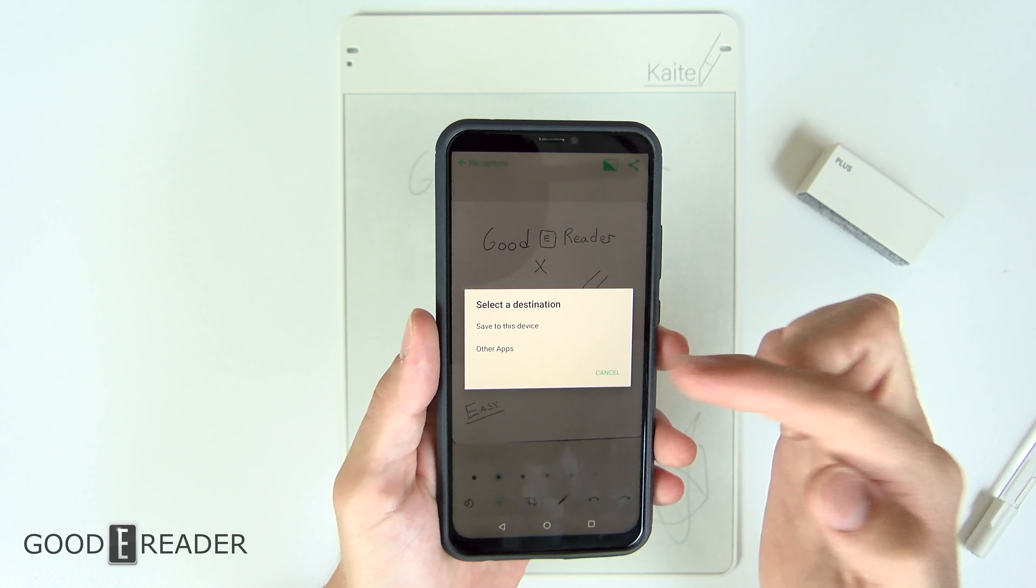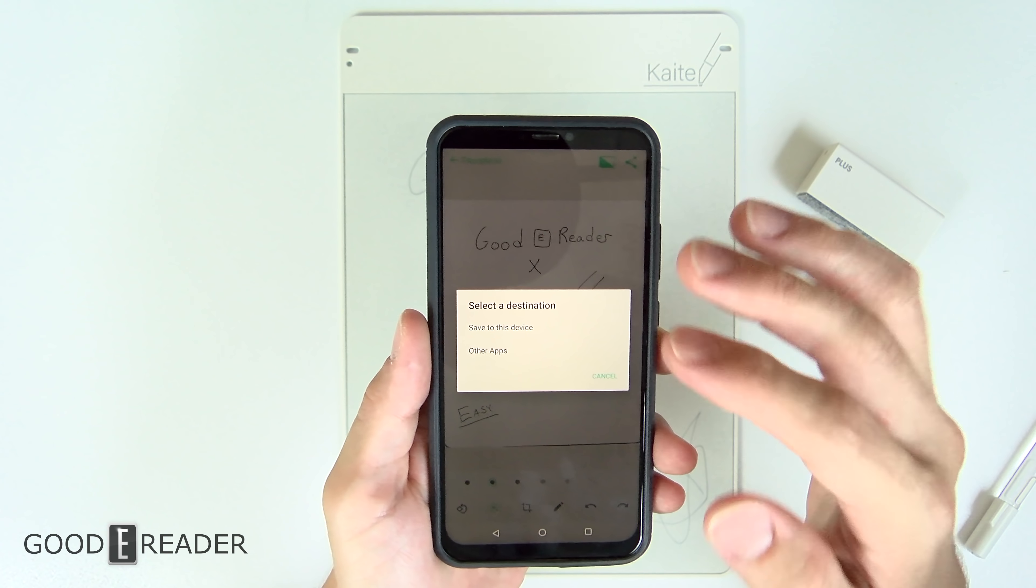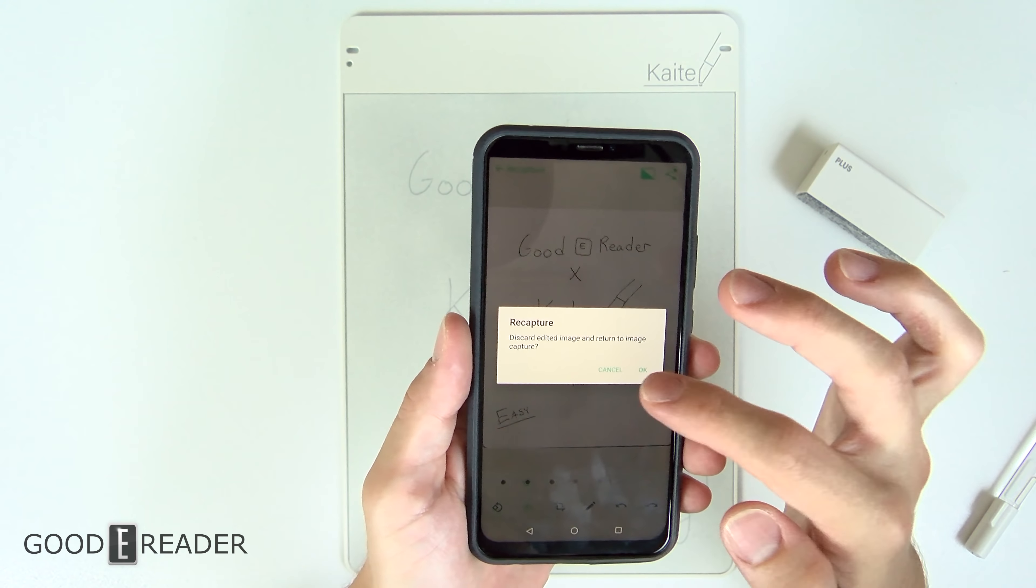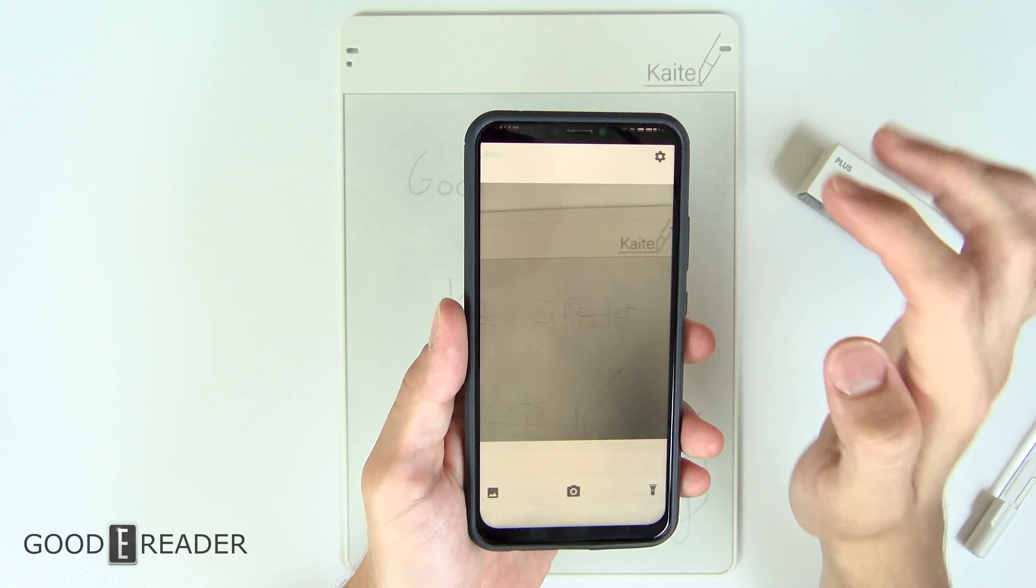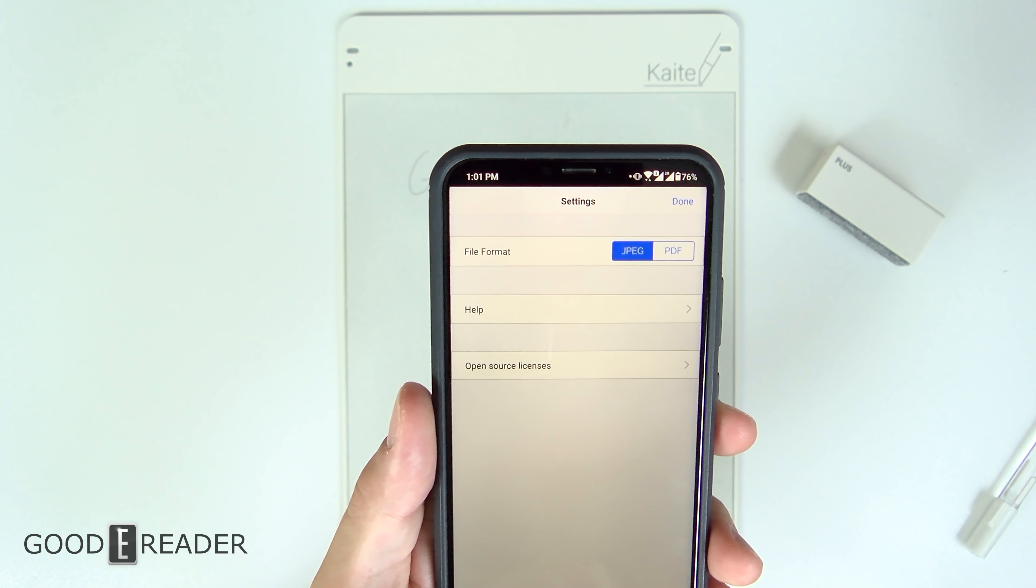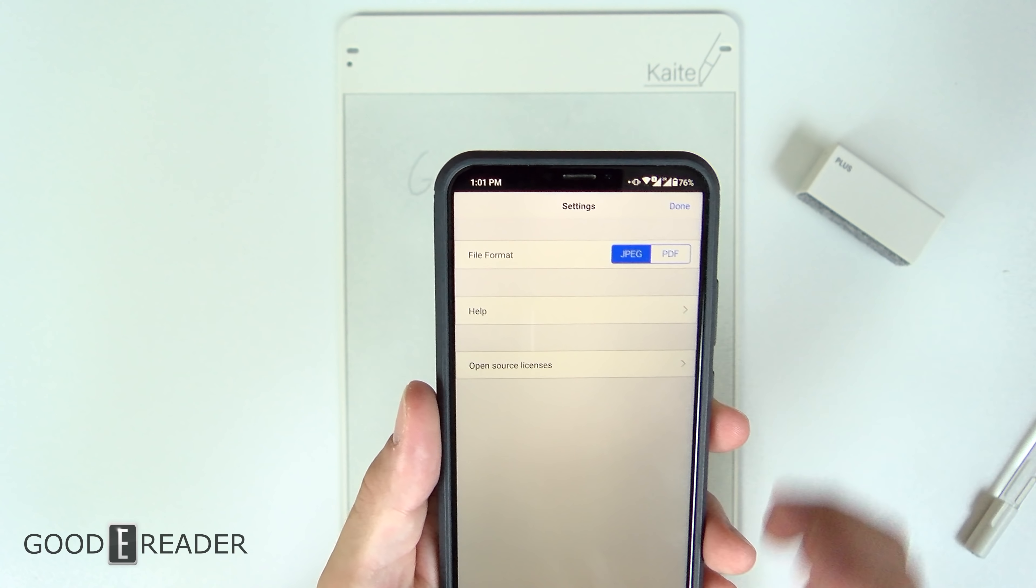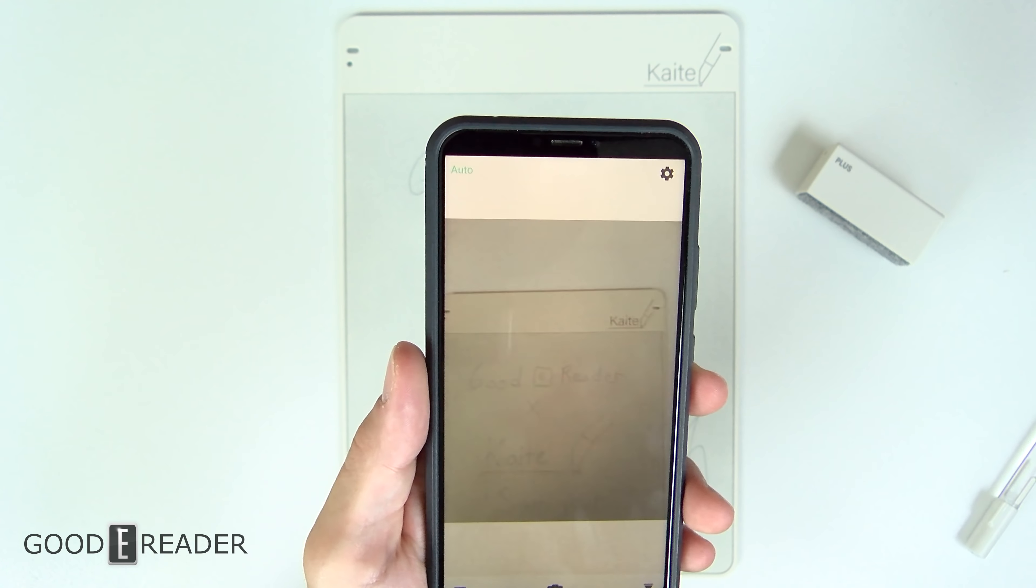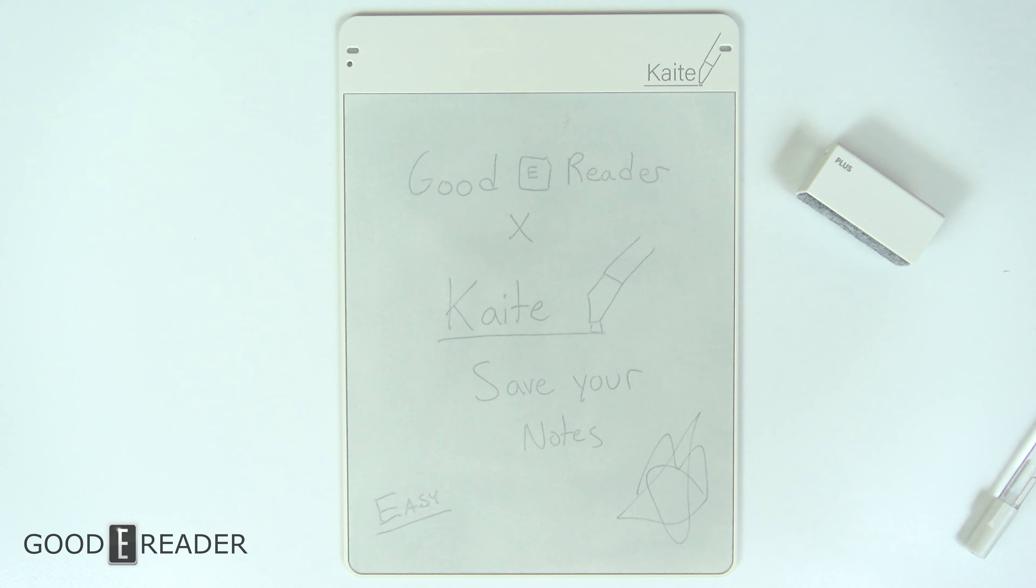and you can actually share it as well. You can send it directly to WhatsApp, you can send it directly to Facebook Messenger, save it to your device, and you do have some options here as well. If you go up to the options wheel, you do have JPEG or PDF as well. So you can actually save your notes into a PDF and export it, not only to your computer, but keep it on your phone, or send it to people immediately, or even email it to yourself.